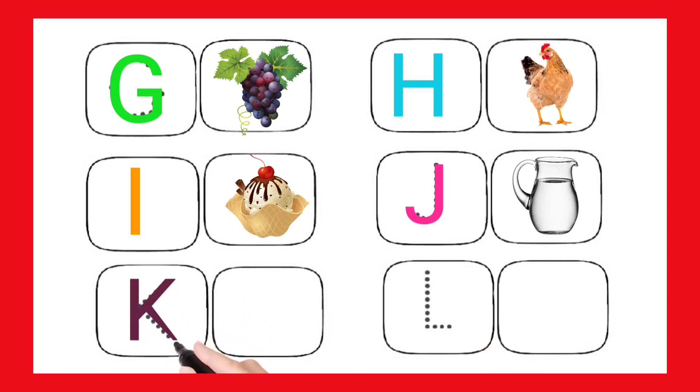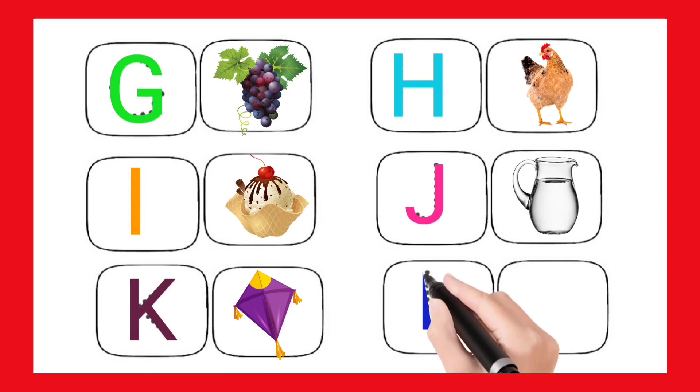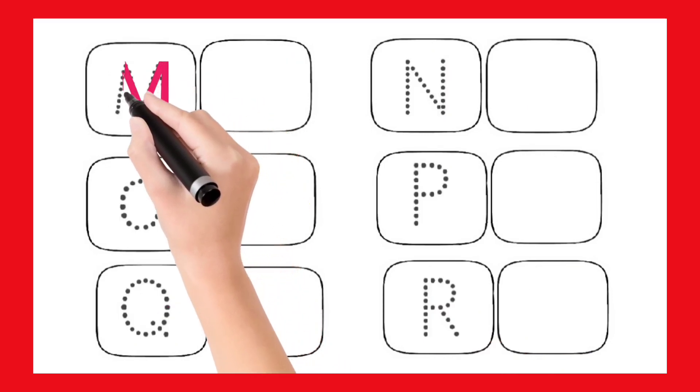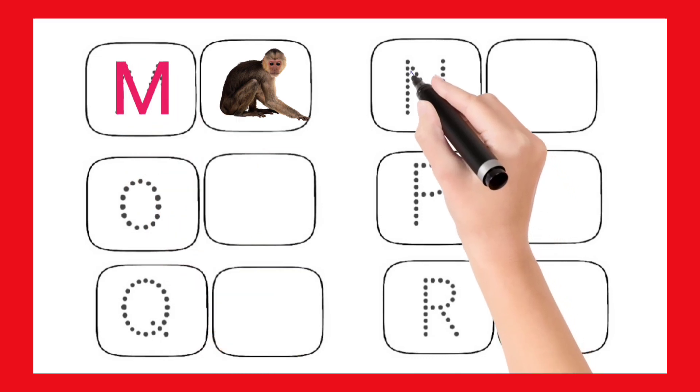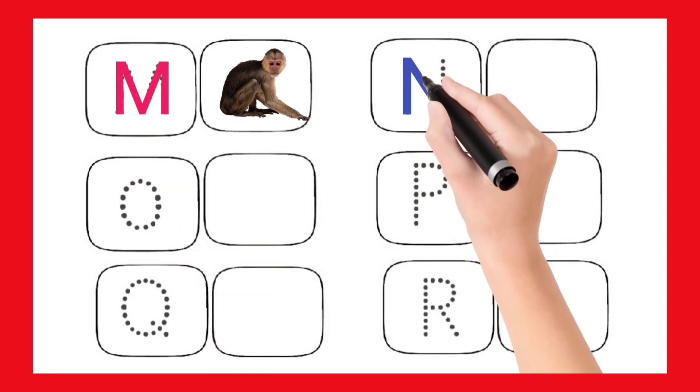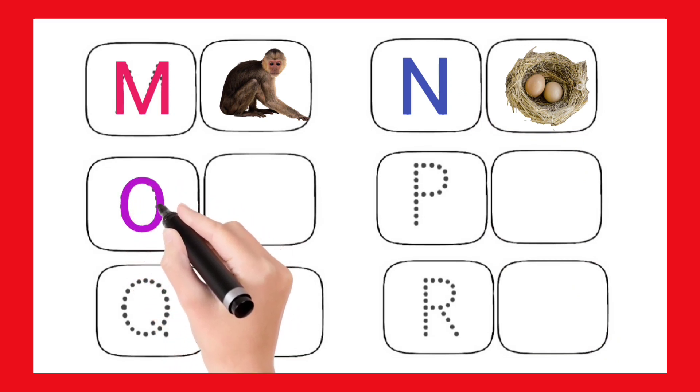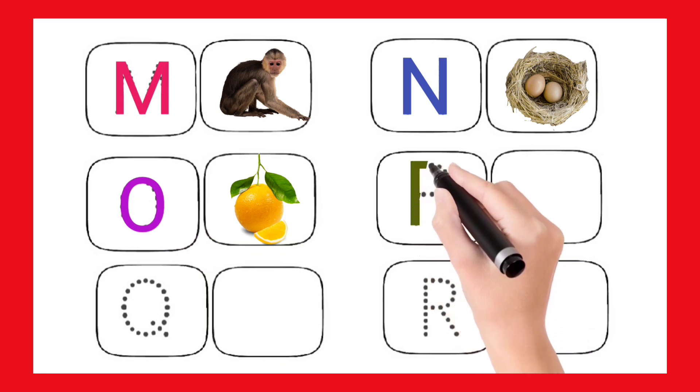K for Kite. L. L for Lion. M. M for Monkey. N. N for Nest. O. O. O for Orange. O for Orange. P.